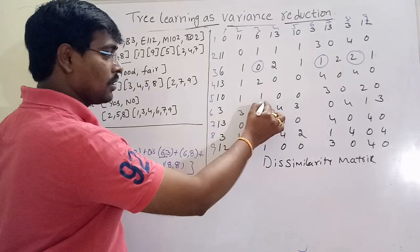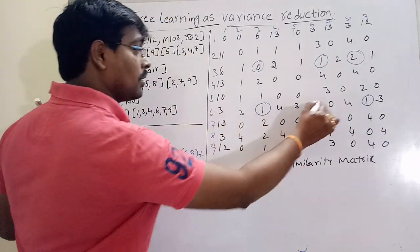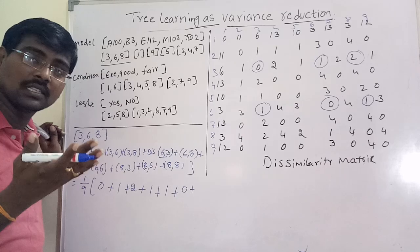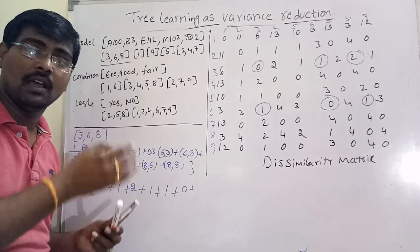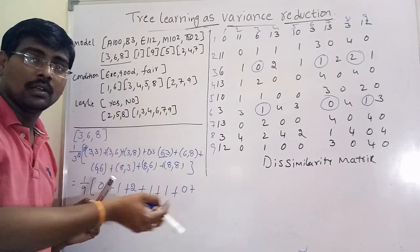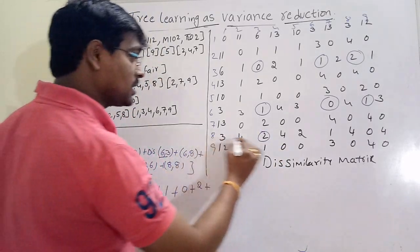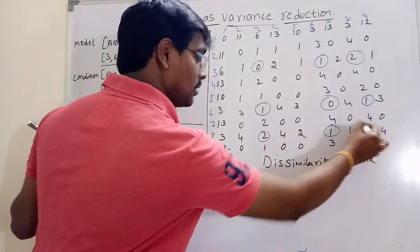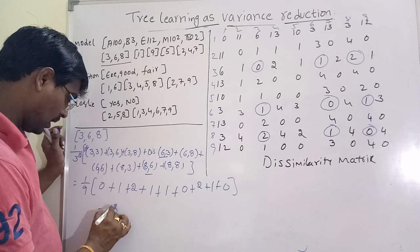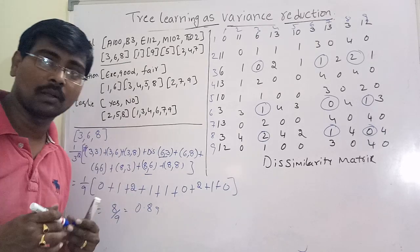Continuing the calculation: dissimilarity(6,3) is 1, dissimilarity(6,8) is 1. All diagonal values are 0 because the dissimilarity between the same instance is 0 — that means the instance is most similar to itself. Then dissimilarity(8,3) is 2, dissimilarity(8,6) is 1, dissimilarity(8,8) is 0. Summing: 0 + 1 + 2 + 1 + 0 + 1 + 2 + 1 + 0 = 8. So the value is 8/9, which equals approximately 0.89.